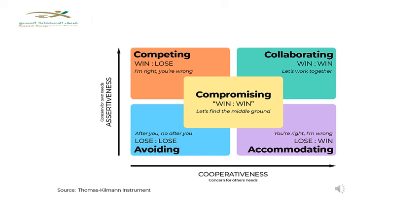Let's start with competing: I'm defending my side — I'm right and you're wrong. Because I'm going upward, I'm highly concerned about my own needs regardless of others' concerns — I'm being more assertive. In avoiding, both sides neglect the argument or conflict — both are low in assertiveness and low in cooperativeness, meaning neither party is concerned about the other's needs nor their own.